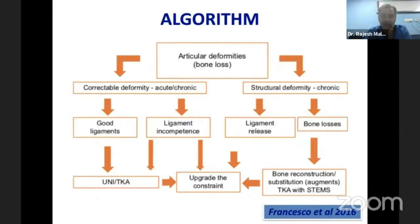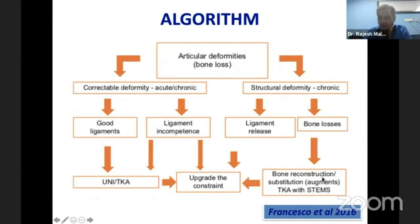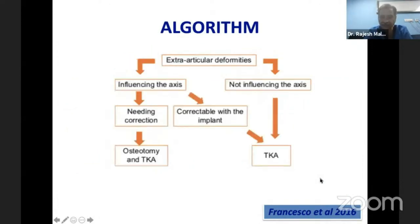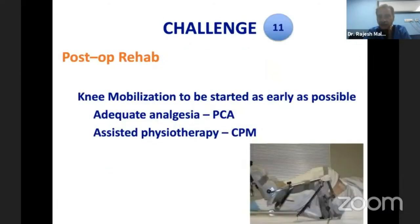The algorithm is: assess deformity — if correctable with good ligaments, you can do uni or TKA. If ligaments are incompetent, upgrade the constraint. If there is chronic structural deformity you may need bony releases, and if there is bone loss you may need bony reconstruction. Extra-articular deformity must be addressed per known algorithms based on whether it influences the mechanical axis.